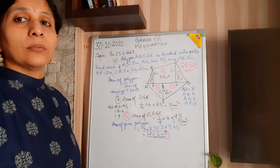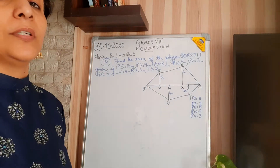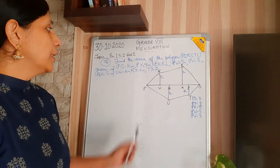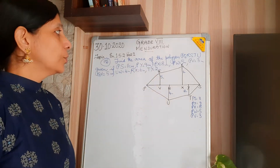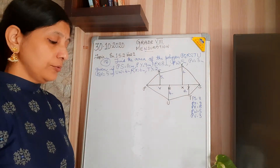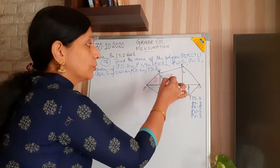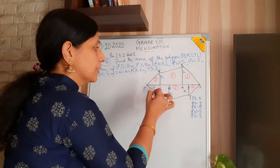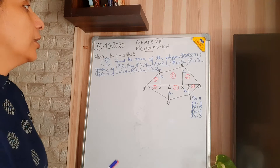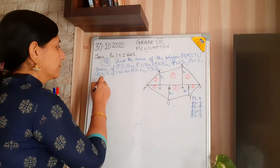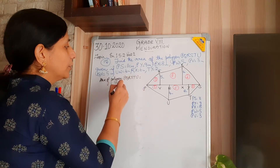We will go for the next one. We are going for the last question of exercise 15.2, question number 15. They have given a polygon PQRSTU. PS is given as 11 centimetres, PY is 9, PX and the perpendicular heights are given. You have to find the area of this polygon PQRSTU using the same method as the previous question. We divide the whole shape into 6 parts of triangle or trapezium shape.